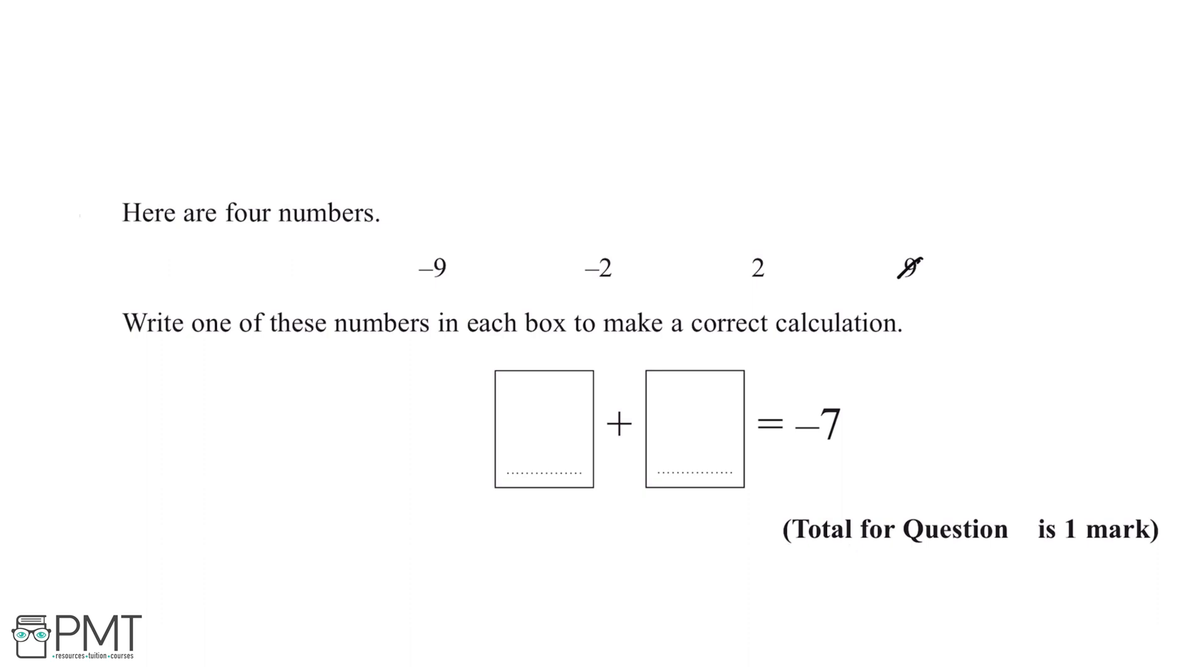If we try adding minus nine and minus two, this will give us minus eleven. This is not equal to minus seven, so we can cross this one out.